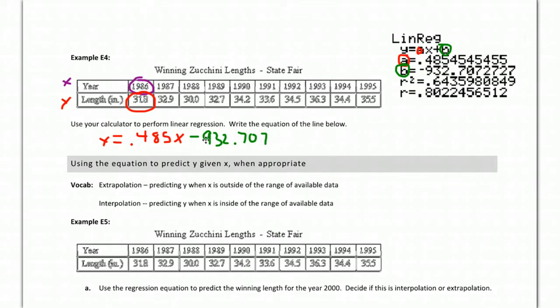So this is my equation of my line of best fit, or my linear regression line. The other thing is the correlation coefficient. I know it's not written on your notes, but correlation coefficient.